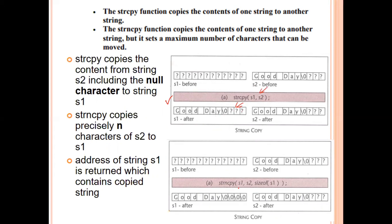In the strncpy function, we mention the destination, the source, and the size — for example, size of s1 — to specify how many characters to copy. This is the key difference between strcpy and strncpy: strcpy copies the entire string, while strncpy copies only up to the specified number of characters.